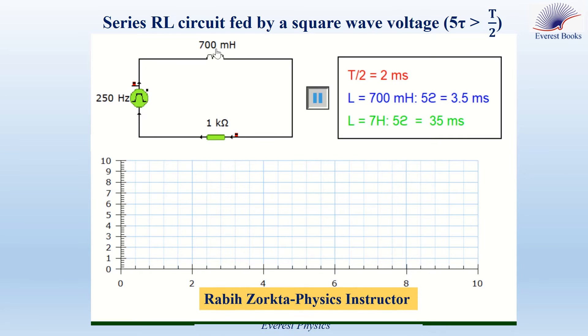Consider a series R-L circuit connected across a generator delivering a square wave voltage of frequency F = 250 Hz. The period of the generator is T = 1/F = 4 ms, so T/2 = 2 ms.